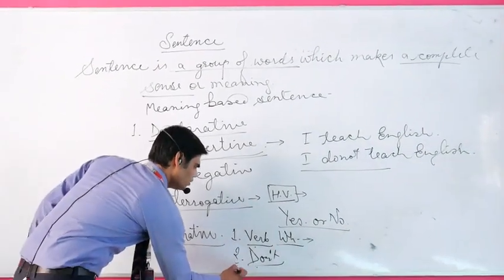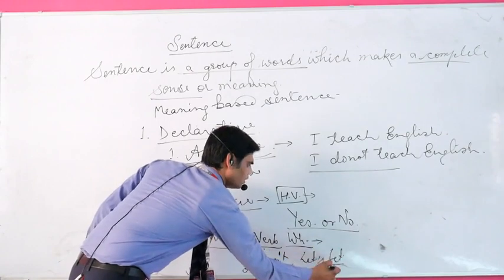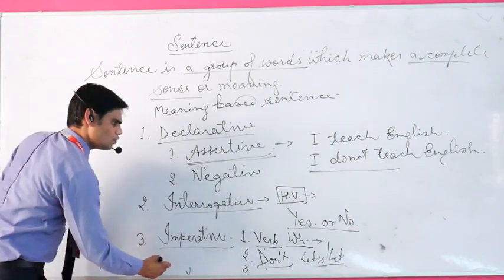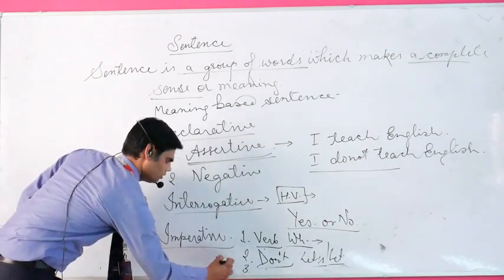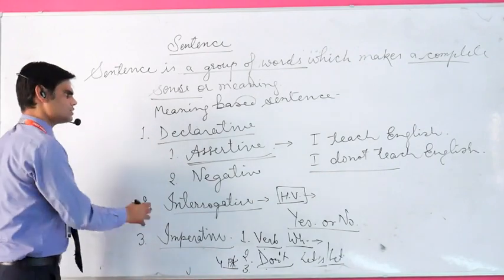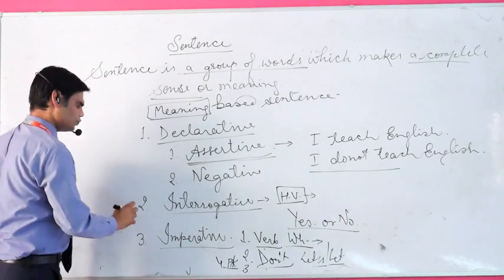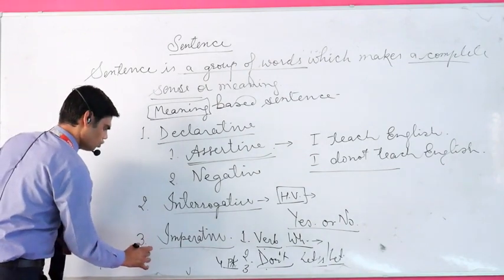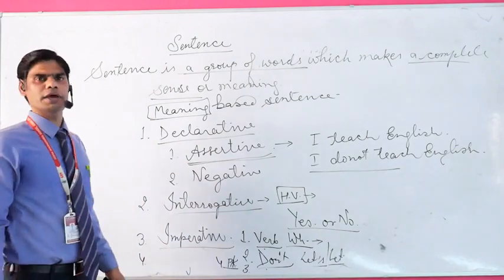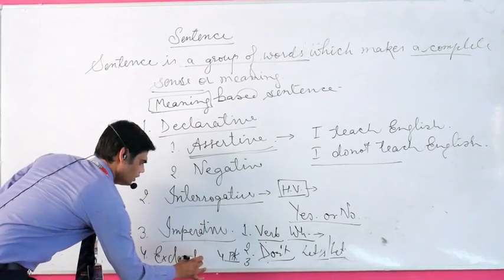The third sub-type of imperative sentences starts with 'let' or 'let us.' The fourth sub-type starts with 'please' or 'kindly.' So in this manner we understand the types of meaning-based sentences. Lastly, we have exclamatory sentences, which we can understand easily as sentences expressing exclamation.